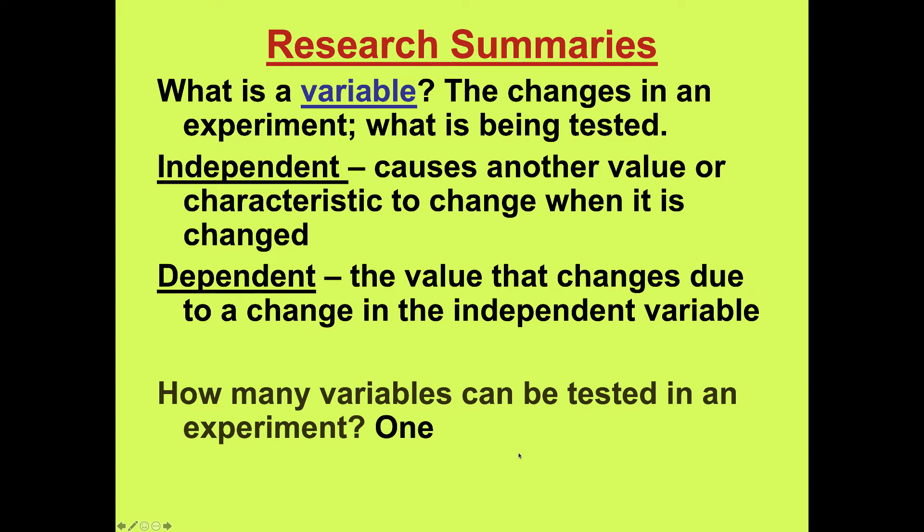The variable is the aspect of the experiment that you change — it's what you're focusing on with your testing. An independent variable is the one that causes changes in other variables and is manipulated by the experimenter. The dependent variable is the variable that changes because of the independent variable — it is dependent upon the independent variable. In most experiments, it's recommended that you only change one variable at a time.